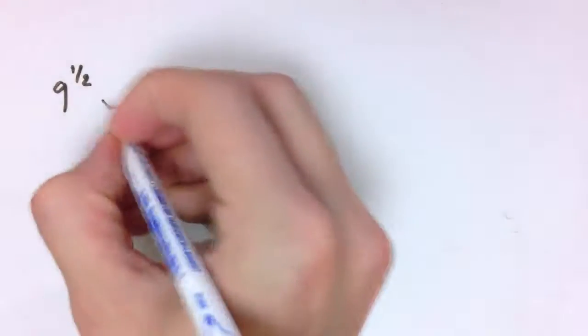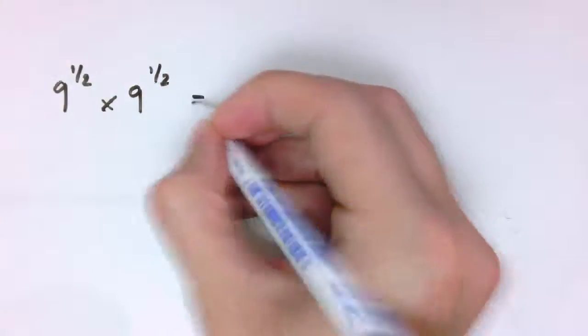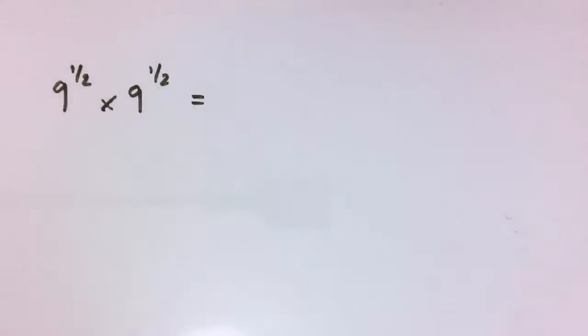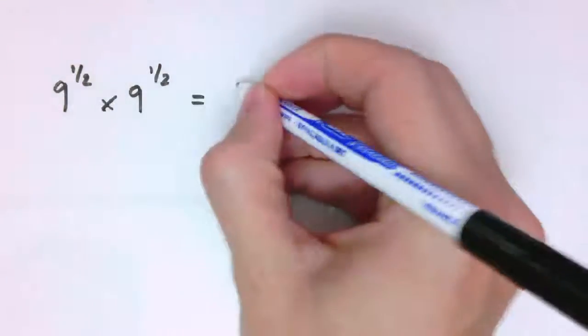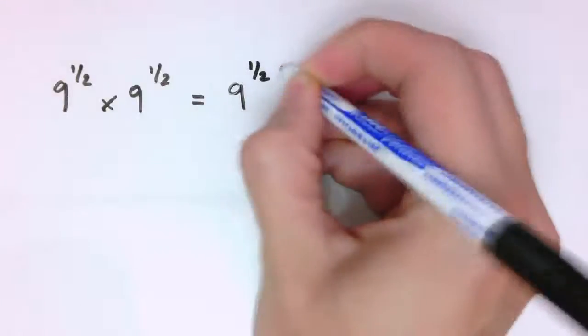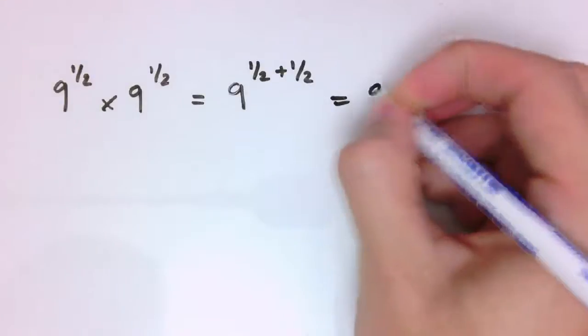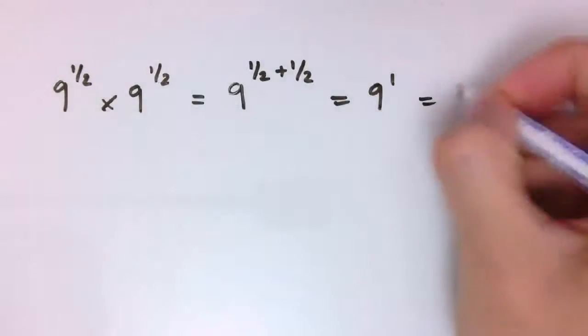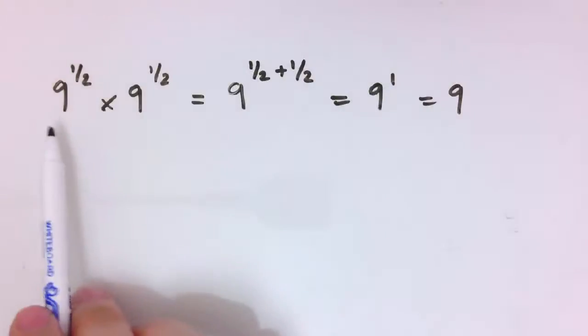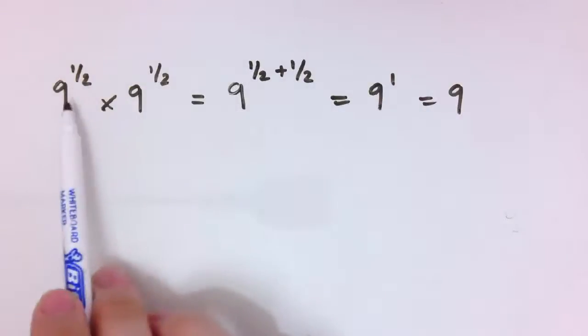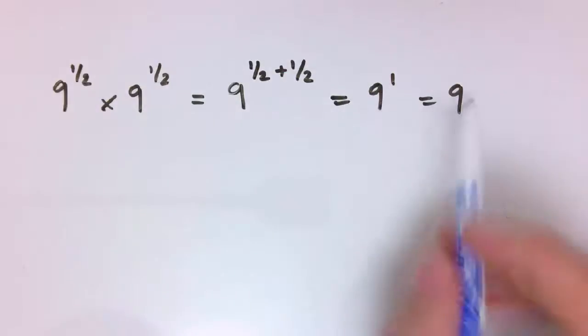In this video, I really want to look at what something like 9 to the 1 half would mean and why, and some extensions. So, if I took 9 to the 1 half and multiplied it by itself, then by one of the rules I've just mentioned, this should be equal to 9 to the 1 half plus 1 half, and that would be 9 to the 1, which is just 9. So 9 to the 1 half is a number that when you multiply it by itself, we get 9.